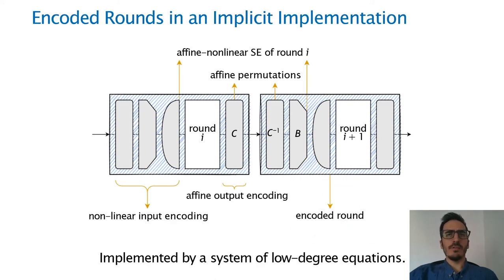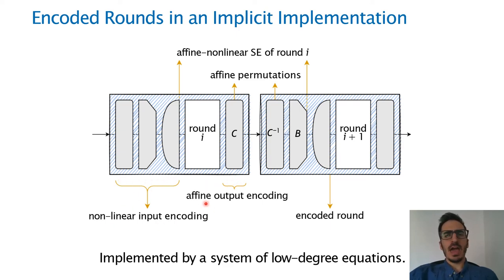The encoded round functions are built in this way so that the input encoding is nonlinear and the output encoding is affine, and thanks to this restriction, we can implement each encoded round as a system of low-degree equations that is easy to solve with Gaussian elimination.